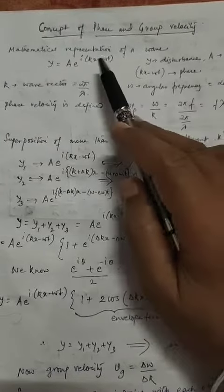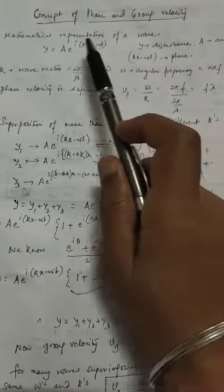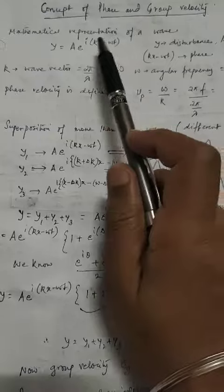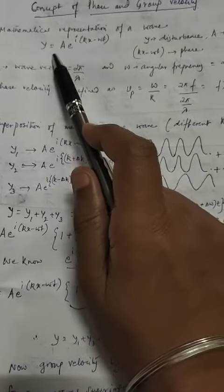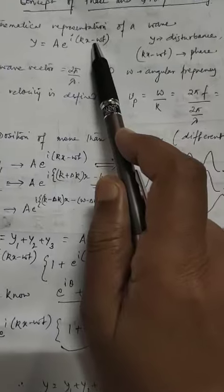Today we are going to study the concept of phase and group velocity. A mathematical representation of a wave, you can see y equals Ae^(i(kx-ωt)).